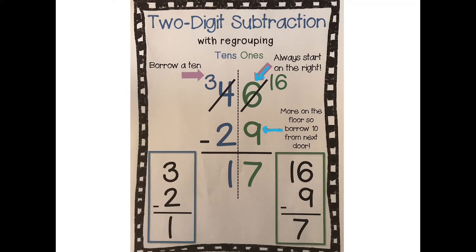9 is bigger than 6, so that means we need to go next door to the 4 and borrow a 10 from them. We take a 10 and give it to our ones. So instead of it being just a 6, we give that 6 a 10 and it becomes 16. Now we have enough on top to take away the 9 from the bottom. 16 take away 9 is 7.